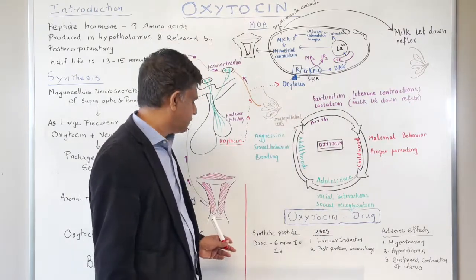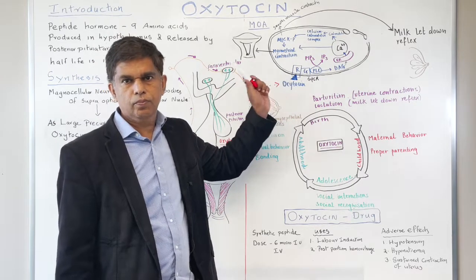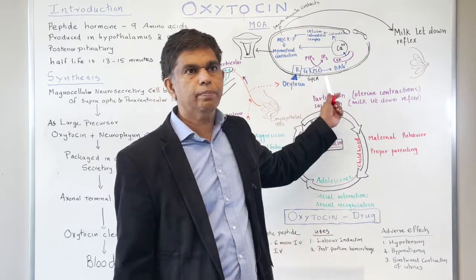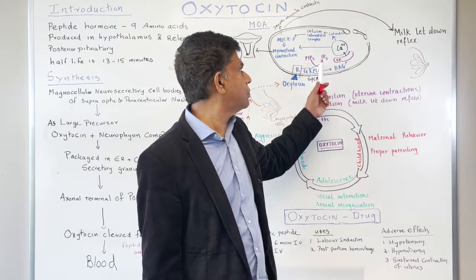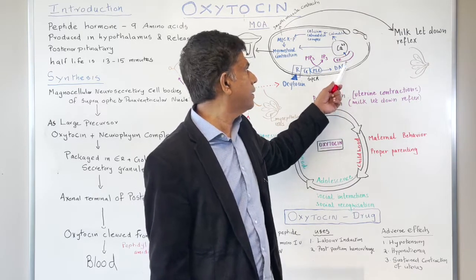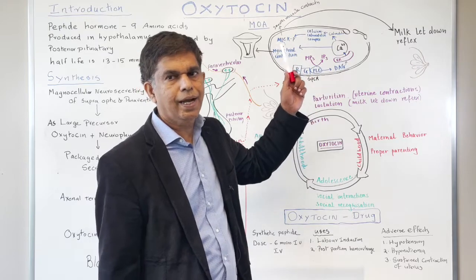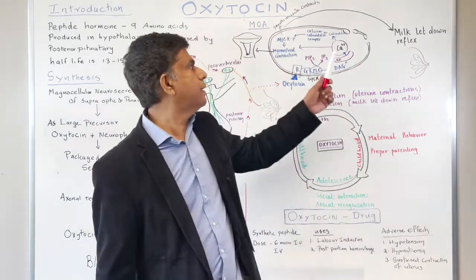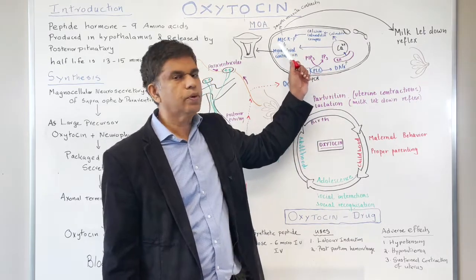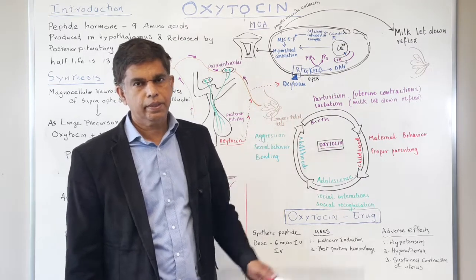Let's summarize the labor pathway: cervical dilatation → signal to supraoptic/paraventricular nucleus → oxytocin release → G-protein coupled receptor → phospholipase C activation → PIP3 converted to IP3 plus DAG → ER calcium release → calmodulin (calcium binding protein) → calcium-calmodulin complex → myosin light chain kinase → myometrial contraction → baby delivered. Remember, that's very important.